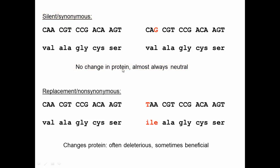In contrast, replacement or non-synonymous mutations or substitutions are ones that do change the amino acid. So here if the cytosine changed to a thymine, that transition occurred and this codon now codes for isoleucine instead of valine. This protein is now different, and this would often be deleterious, sometimes beneficial, sometimes neutral. The exact ratios are under debate. But when you have a change that changes the amino acid, we term this replacement or non-synonymous — this is not a synonym for the original because they have a different meaning.